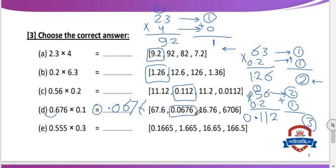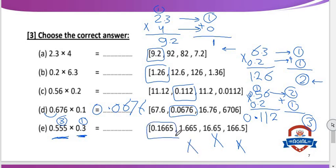Letter E: 0.555 multiply 0.3. In 0.555, decimal point is after 3 digits; in 0.3, decimal point is after 1 digit. 3 plus 1 equals 4. So we will put decimal point after 4 digits from the right to the left. Without multiplying, we can check which answer choice has decimal point after 4 digits — that one is correct. The result will be 0.1665.